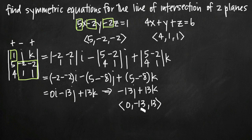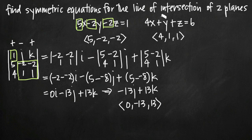This vector (0, -13, 13) is orthogonal to both normal vectors, making it parallel to our line of intersection between the two planes. We now have the direction for the line, so we just need a point on it. To find a point, we'll plug z equals 0 into both plane equations. That reduces us to two variables, and we can use simultaneous equations to solve for x and y. The value z equals 0 will then be the z-coordinate of our point.